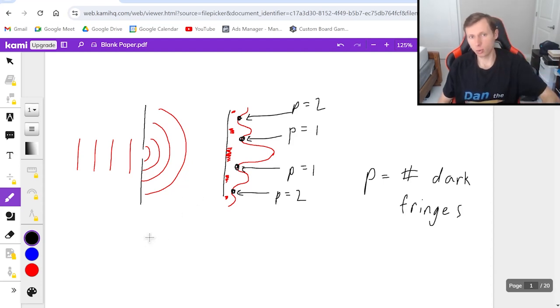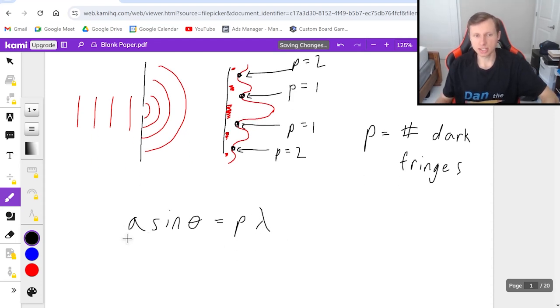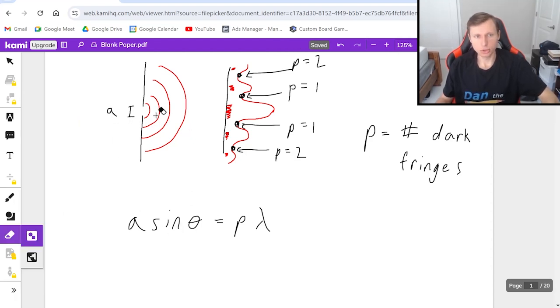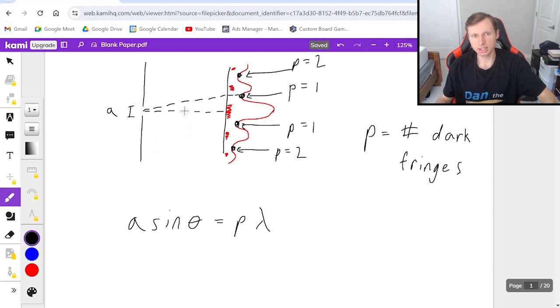The equation for single slit diffraction is a sine theta equals p lambda. a is the slit width, sine theta is the angle to that p value, and lambda is the wavelength, which can also be found using c equals lambda f, where c is the speed of light, 3 times 10 to the eighth, and f is the frequency measured in hertz.